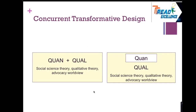Whether the embedded component is qualitative or quantitative, remember: in concurrent transformative design, the qualitative would always be predominant, and the quantitative would be the secondary, supplementary data.